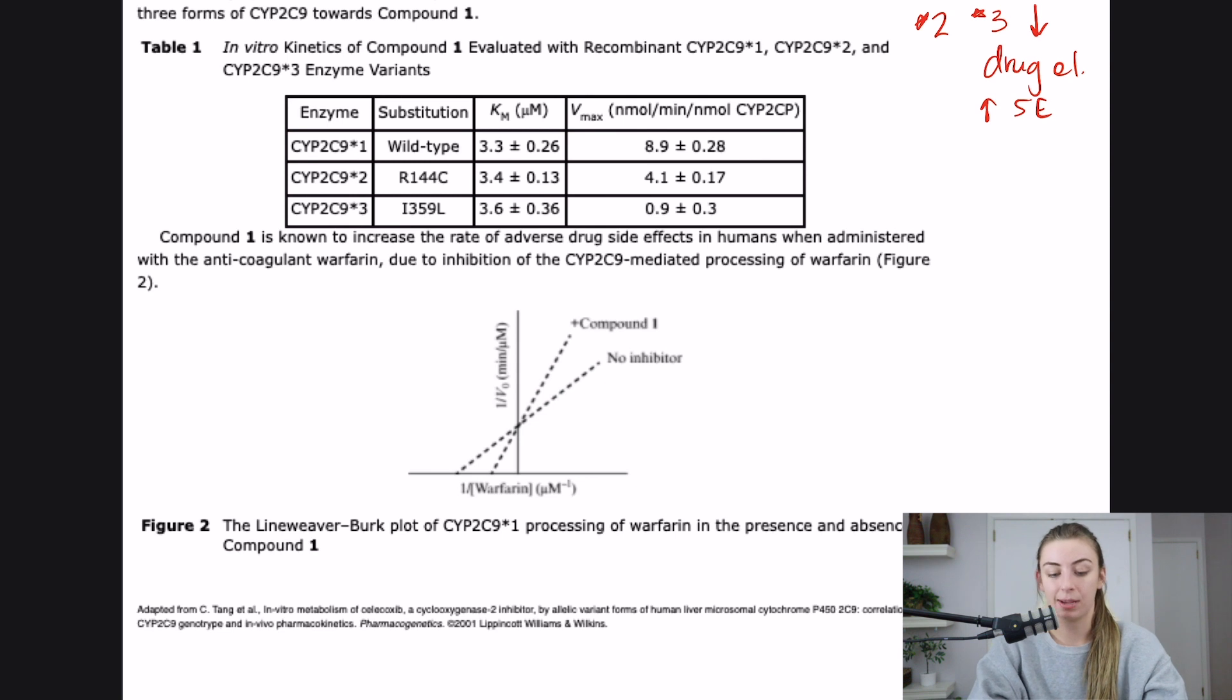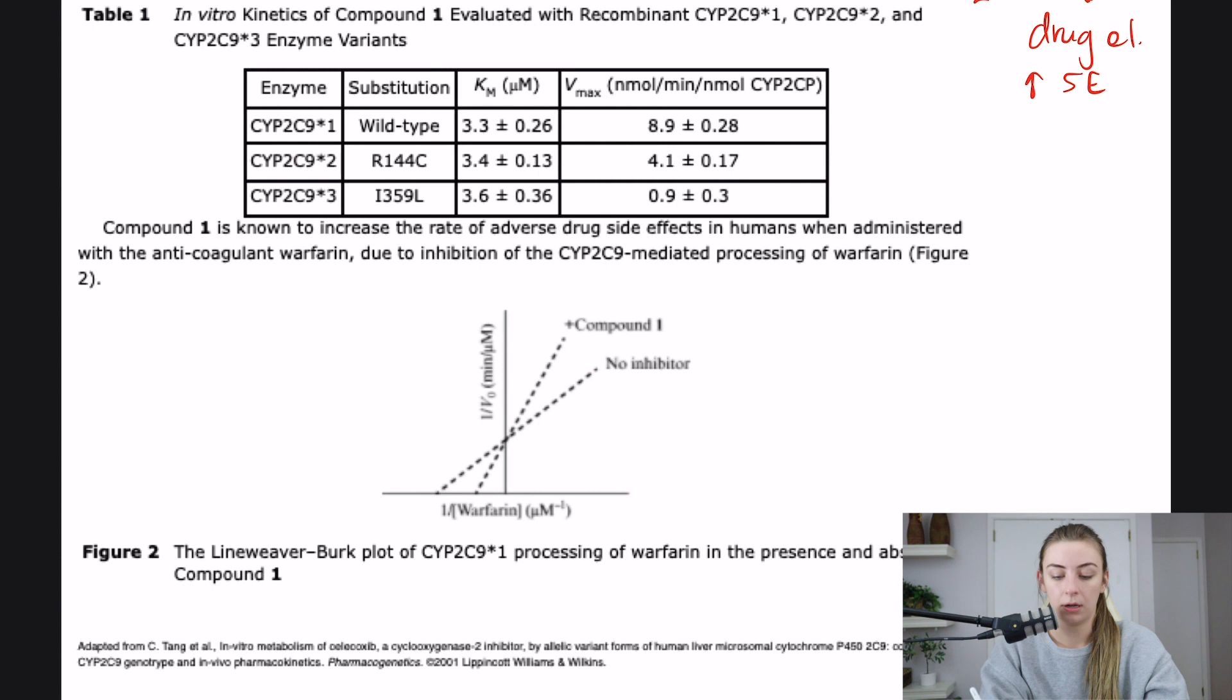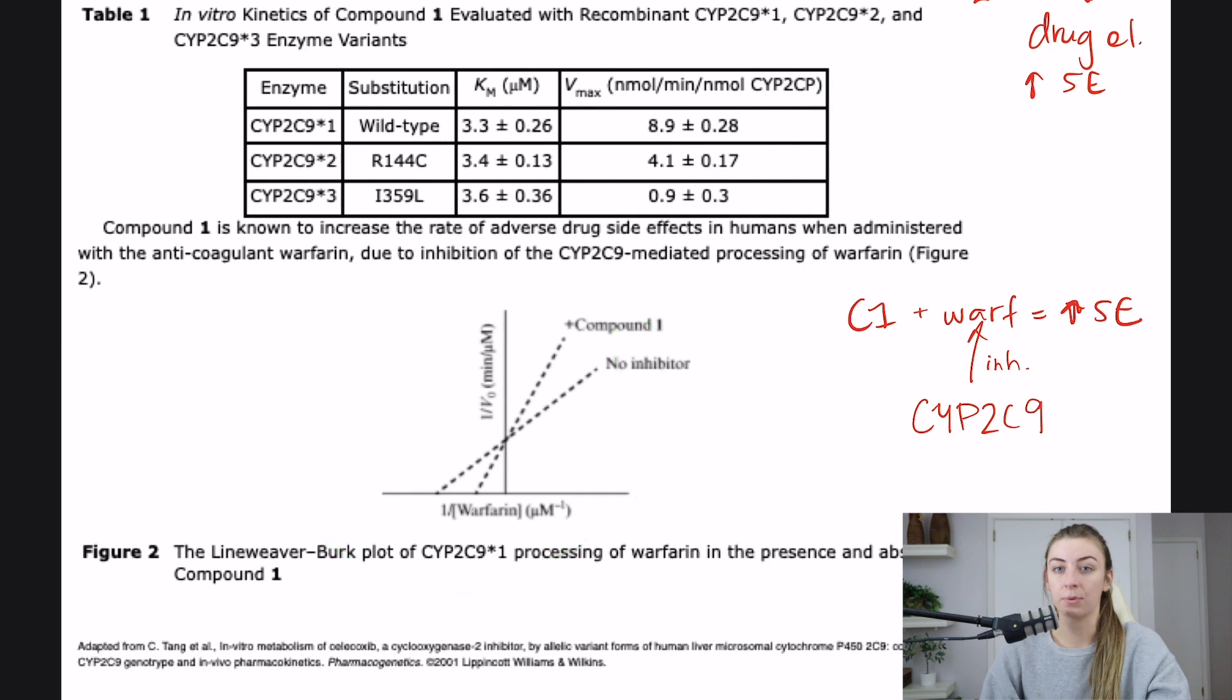Compound one is known to increase the rate of adverse drug side effects in humans when administered with the anticoagulant warfarin, due to inhibition of the CYP2C9 mediated processing of warfarin. So compound one plus warfarin equals increased side effects because we are inhibiting this. And another figure, it says the Lineweaver-Burk plot of CYP2C9 one processing of warfarin in the presence and absence of compound one. So that's definitely foreshadowing right there. They're coming out with a Lineweaver-Burk plot. That's definitely basic science that they love to ask questions about.